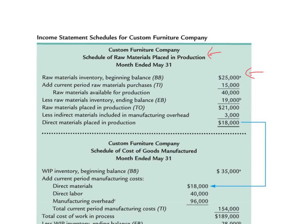We add to the $25,000 beginning balance our current period raw materials purchased of $15,000, giving us a subtotal of $40,000 available. We then subtract the $19,000 ending balance in raw materials. That tells us that $21,000 worth of raw materials was transferred out and placed into production. So we had $40,000 available, some was placed in production and some was not — the $19,000 that remained was not placed in production.